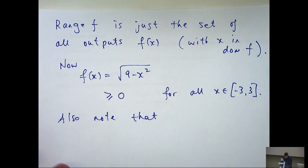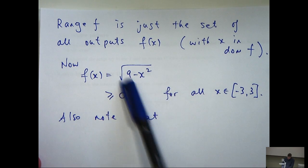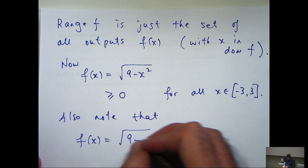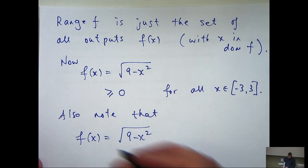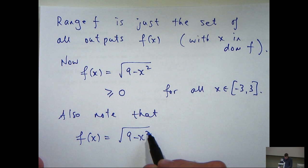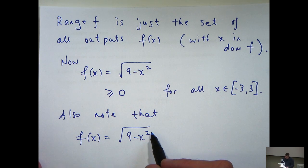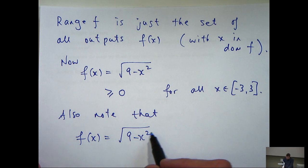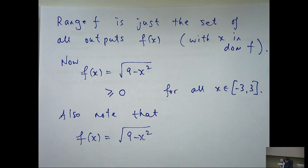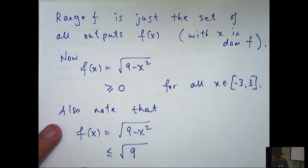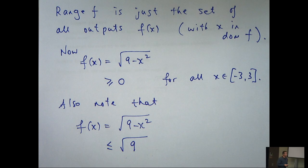Also, note that, well, is there another inequality that I can use here? Well, here I've got the square root of 9 minus x squared. Now, x squared is always non-negative. So we're taking the square root of 9 minus some non-negative number. So in fact, I can form the following inequality. This is just 3 here.